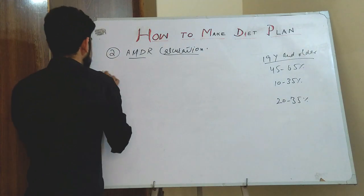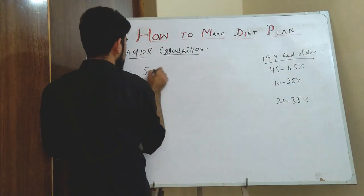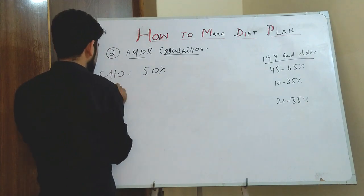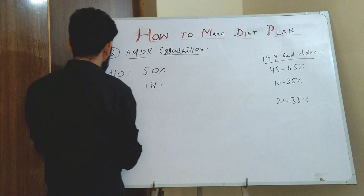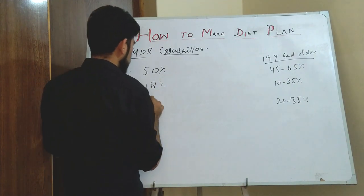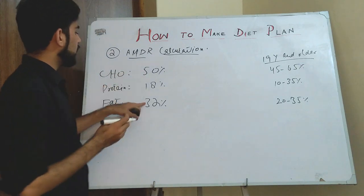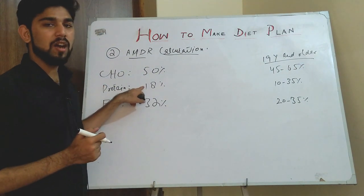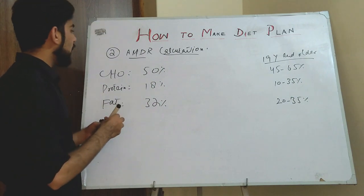I select carbohydrate at 50 percent, protein at 18 percent, and fat at 32 percent. So 50 plus 18 plus 32 equals 100 percent — completely accounted for.